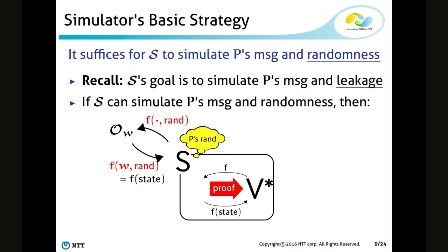Recall that in the definition of leakage resilient zero knowledge, the simulator is required to simulate the cheating verifier's view, including the leakage and the answer to the leakage query. So the simulator has to simulate the prover's message and leakage for the cheating verifier. However, if the simulator can simulate the prover's randomness, then the simulator can easily simulate the leakage by forwarding the leakage query from the cheating verifier to the leakage oracle, with the simulated randomness hard-wired at the input of the function. So it suffices to construct a protocol such that the prover's message and randomness can be simulated.